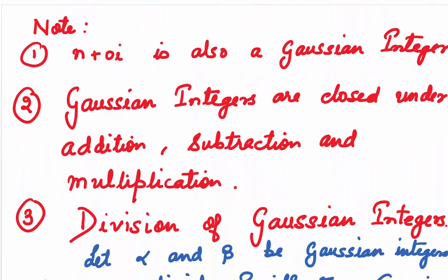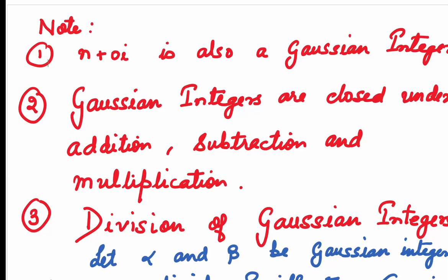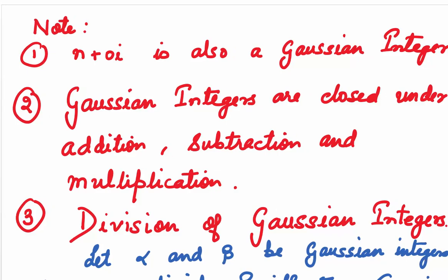A few things to note: numbers of the type n plus 0i are also Gaussian integers. Gaussian integers are closed under the operations of addition, subtraction, and multiplication. This means when we add, subtract, or multiply two Gaussian integers, we will still get a Gaussian integer.